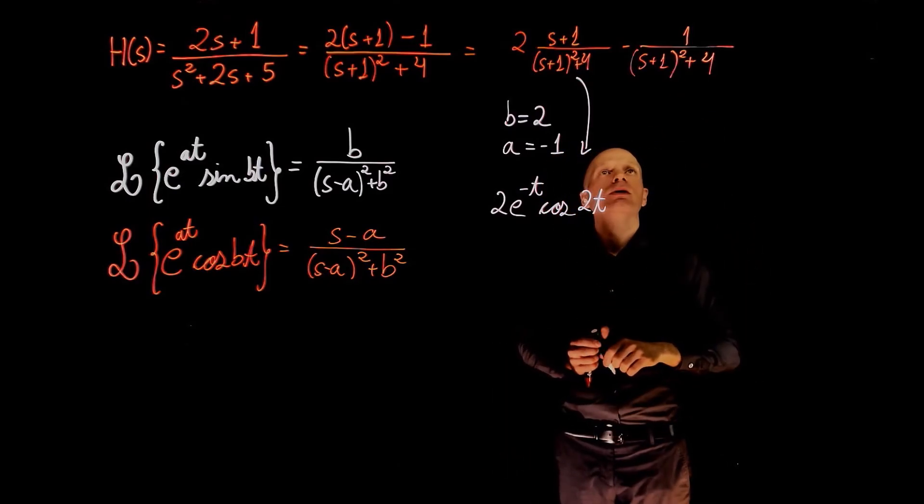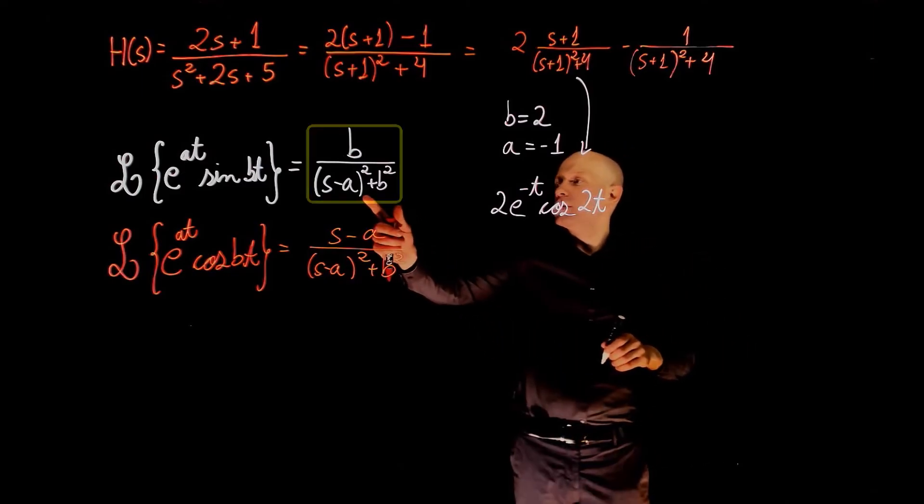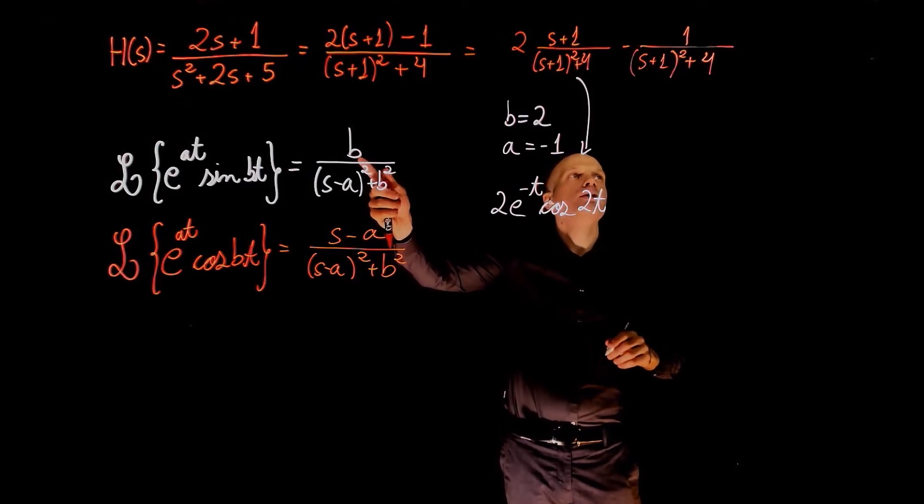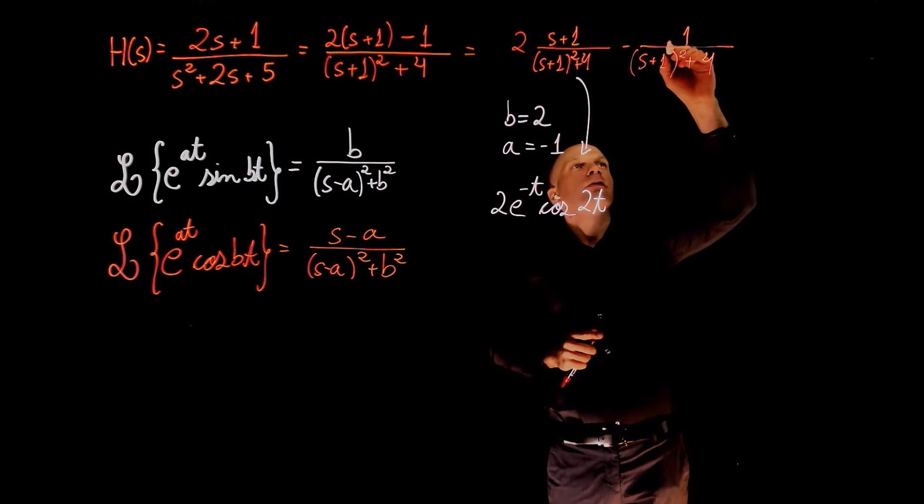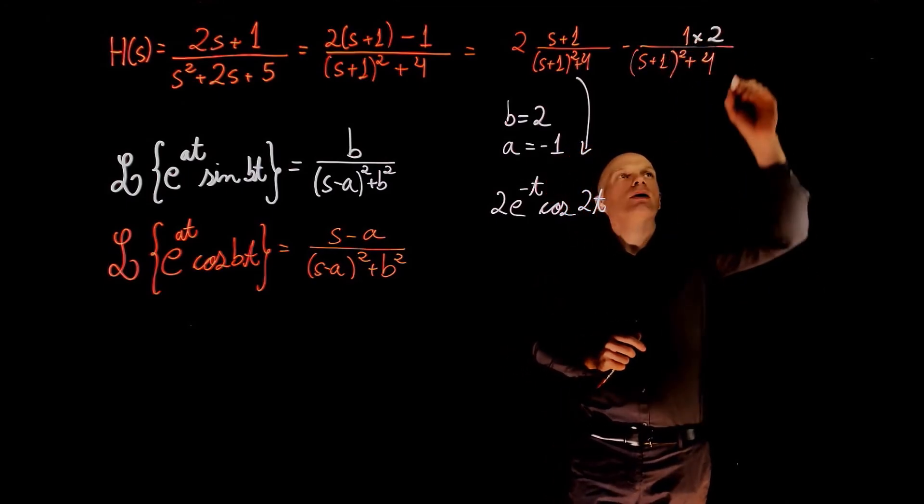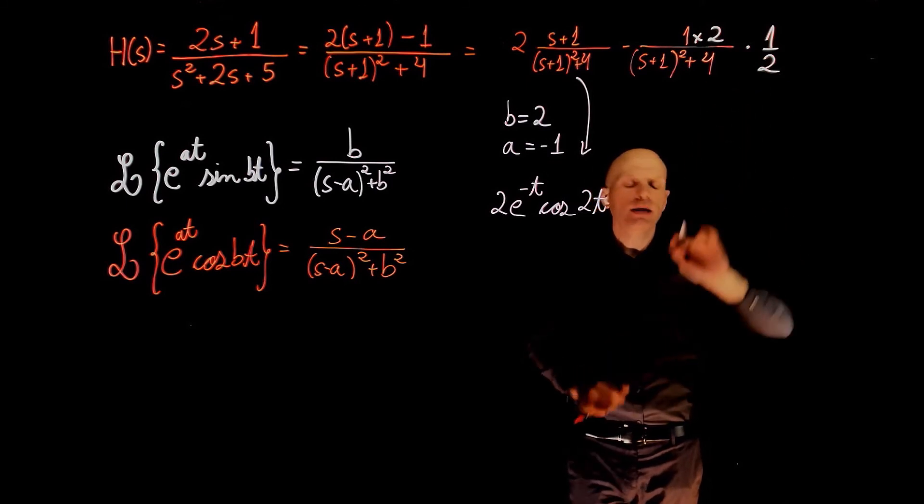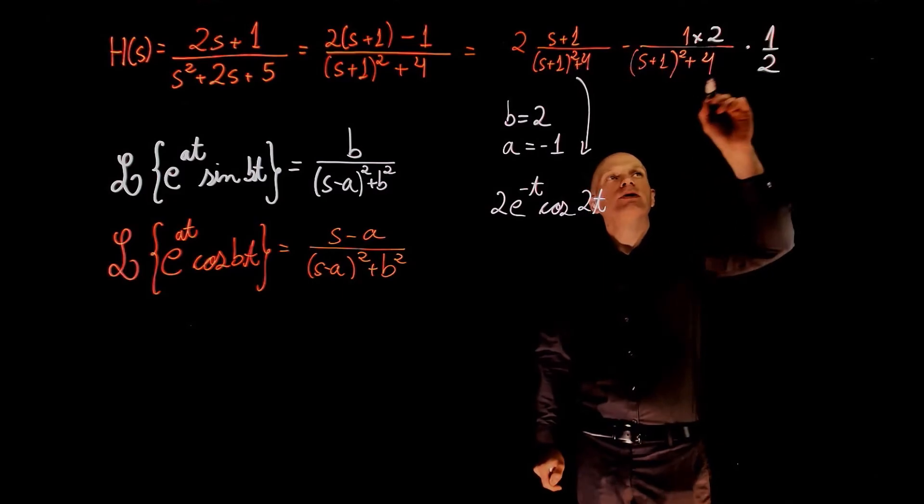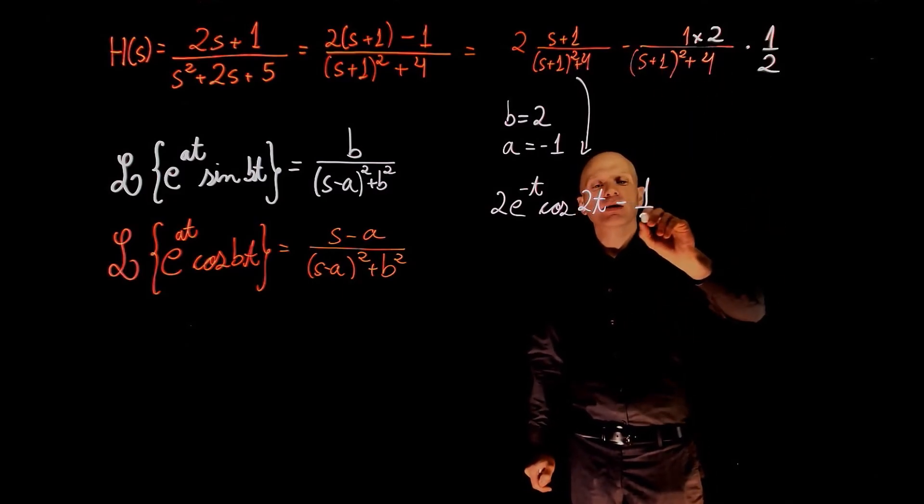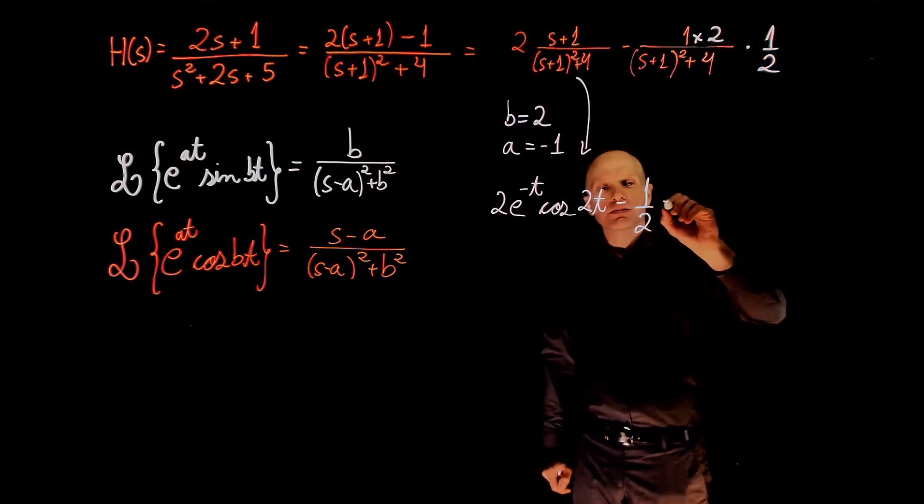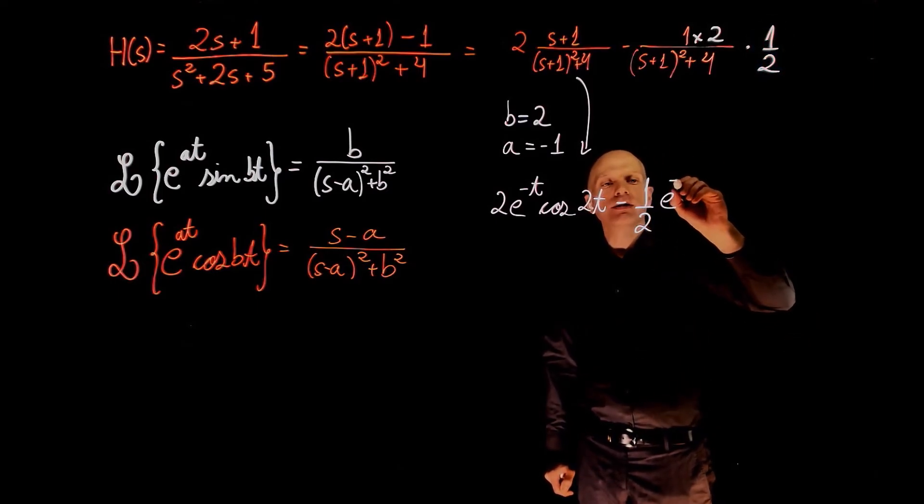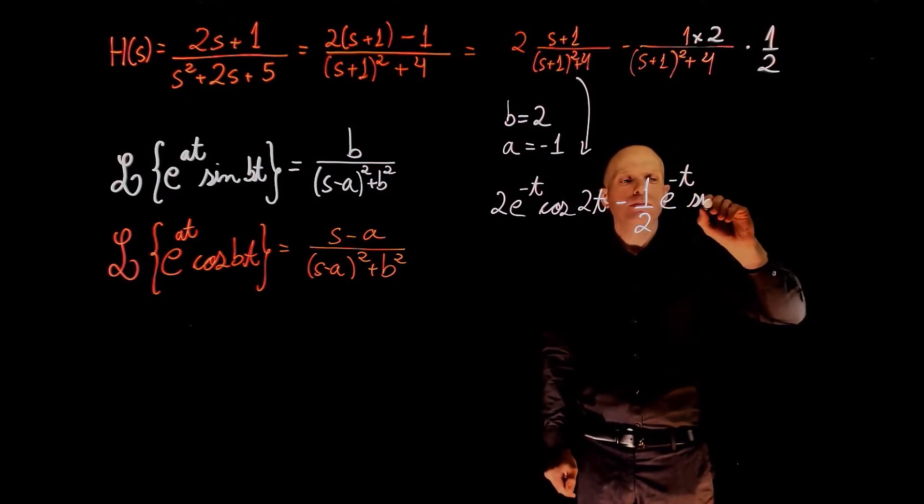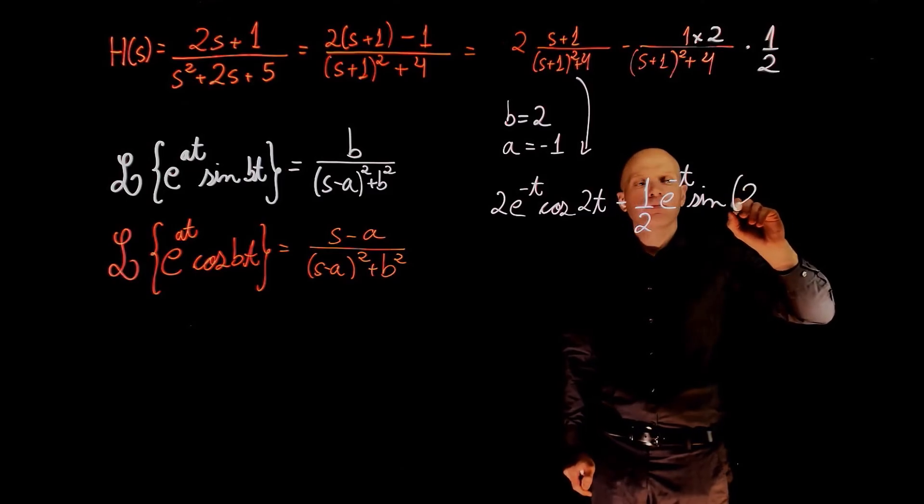For the second term of this equation, we fall into this category here, but now we need b in the numerator. So in order to have b in the numerator, we can multiply the top of the equation by 2, and of course, divide it by 2, so we maintain the same final value. Now this part of the expression simplifies as negative 1 half from here, exponential of negative a, t, negative t, a is negative 1, sine of b, t.